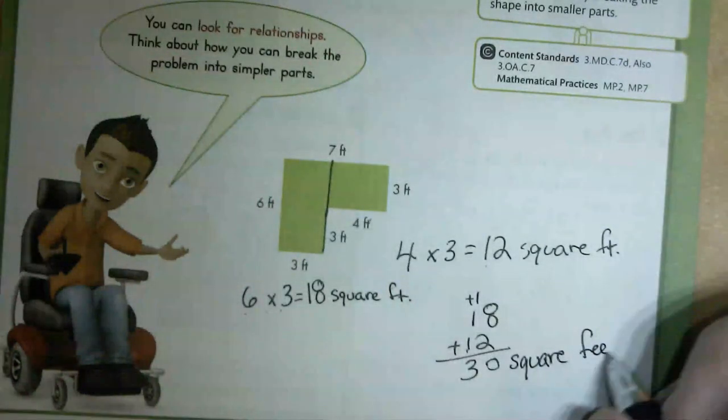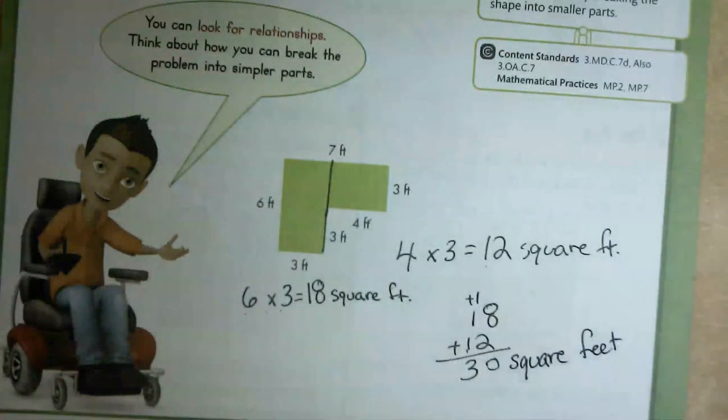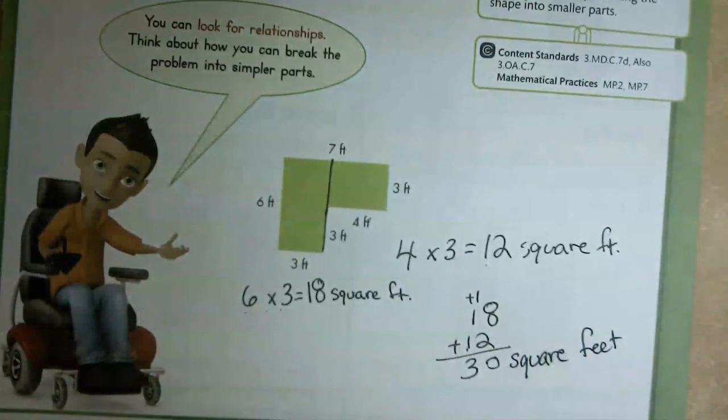Now I need to add everything together. Eighteen plus twelve equals thirty square feet altogether.